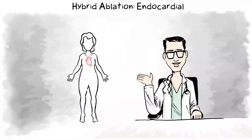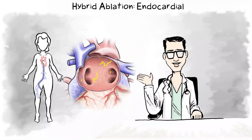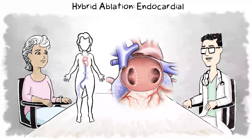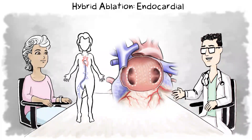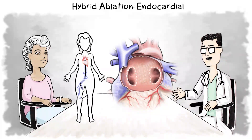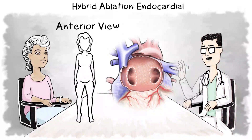Part two of the hybrid procedure is endocardial. A second doctor makes a small incision in the femoral vein, allowing access to the heart through the vein. The doctor looks at an electrical map of the heart, which can show any remaining abnormal electrical signals after the first procedure. The doctor creates lesions at the pulmonary veins and any areas that still have abnormal activity, overlapping the lesions on the outside of the heart and ensuring a durable barrier. Endocardial lesions treat areas that cannot be reached epicardially. The doctor then verifies the procedures are complete.